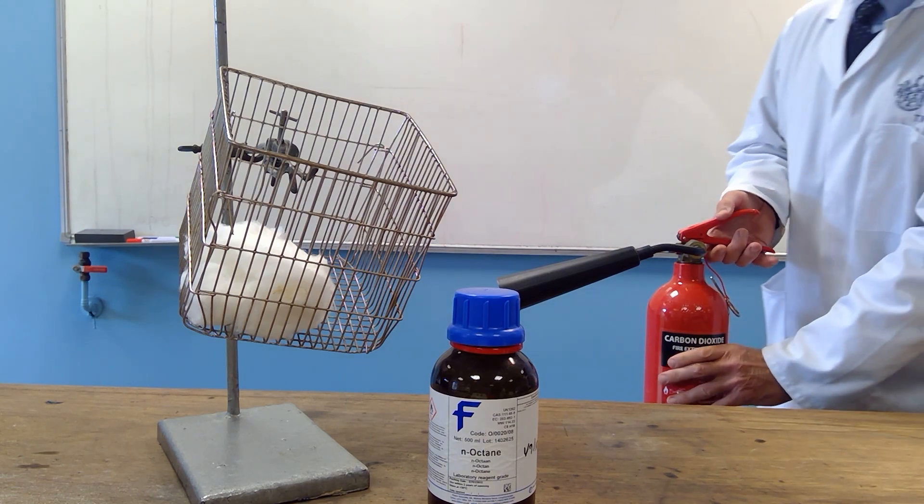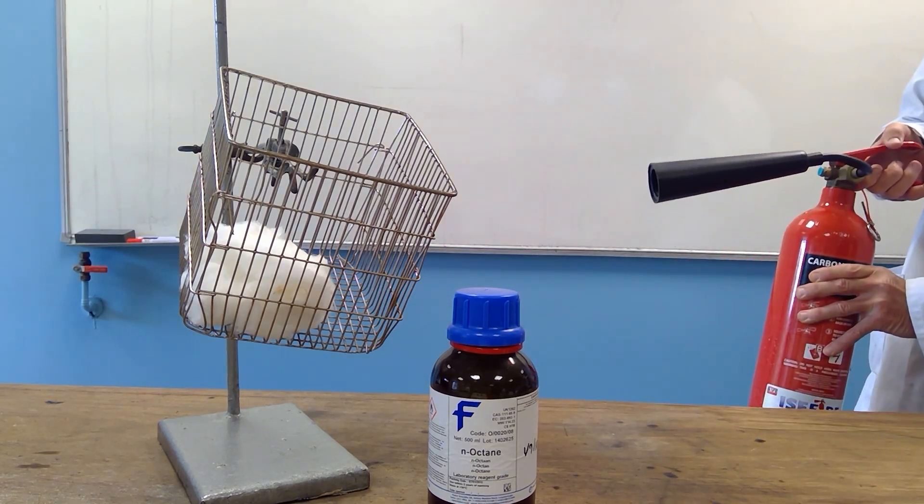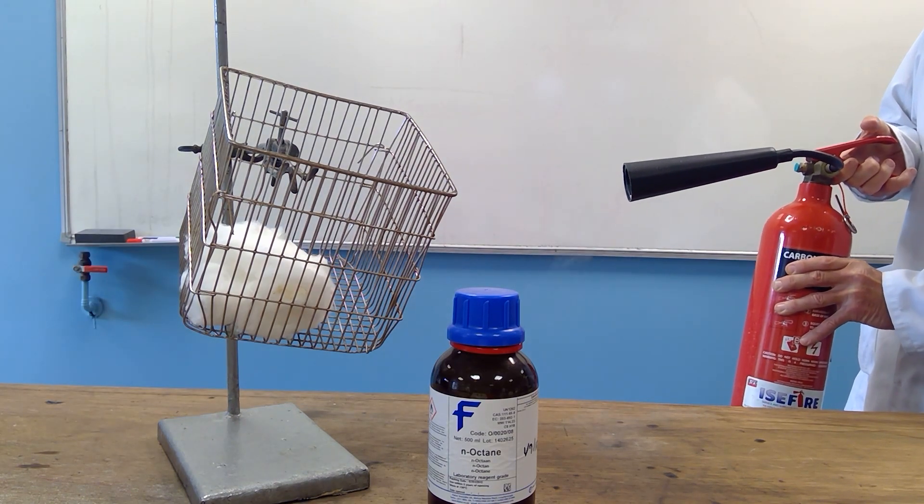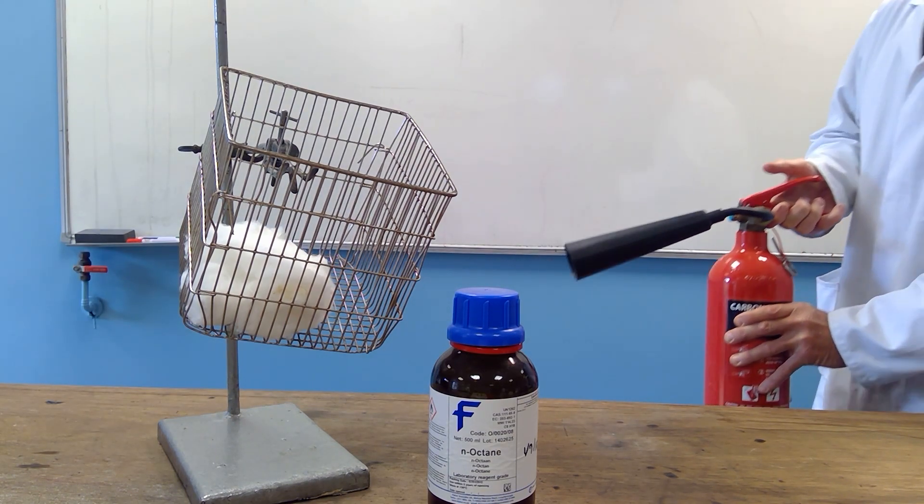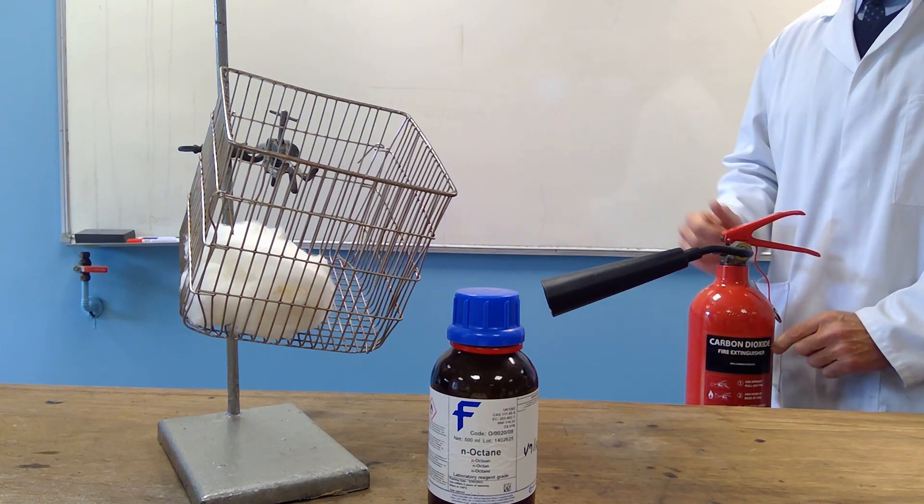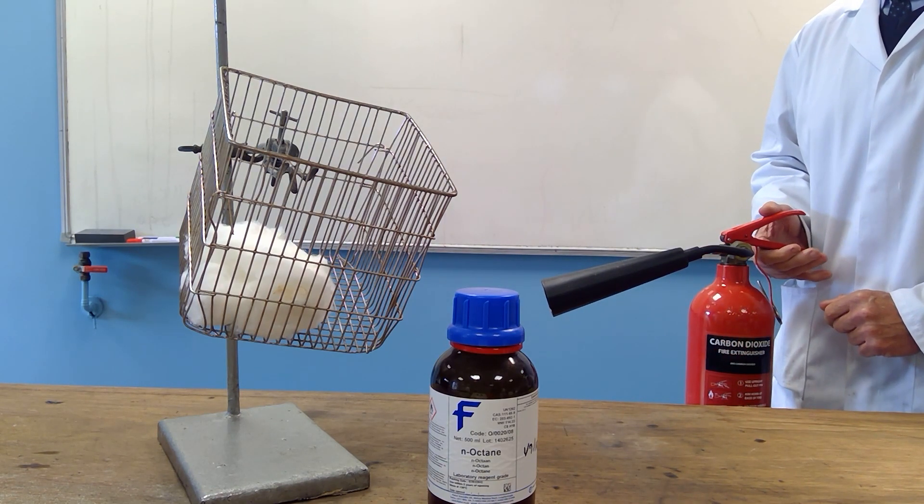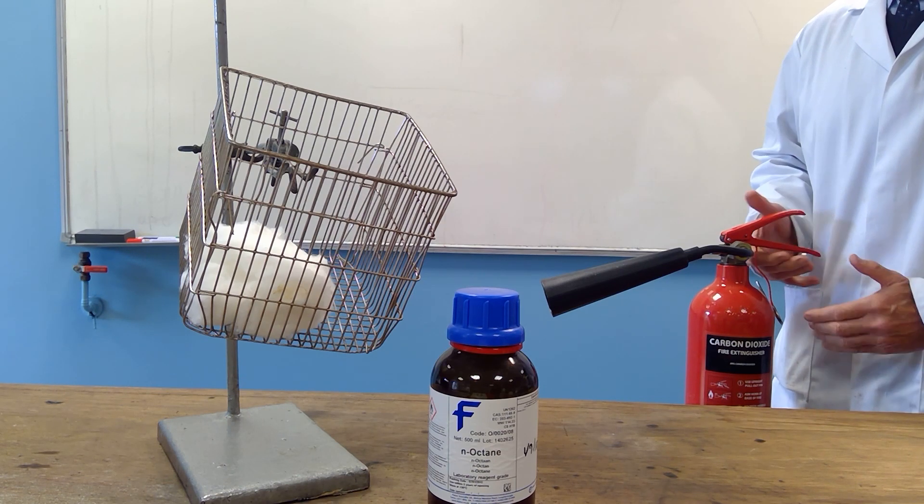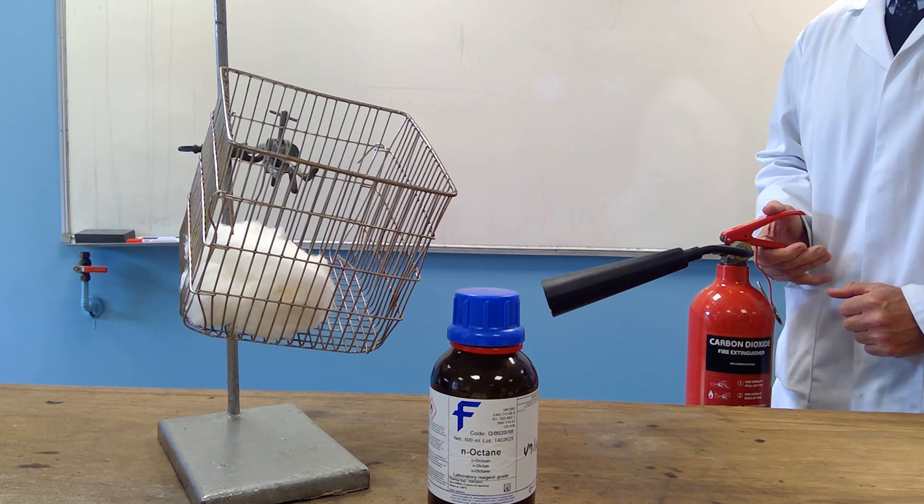When you allow the fire extinguisher to operate, the carbon dioxide will escape rapidly as a gas, and the white powder that you can see as it comes out is merely the solid carbon dioxide dry ice that escapes prior to subliming back into carbon dioxide gas.